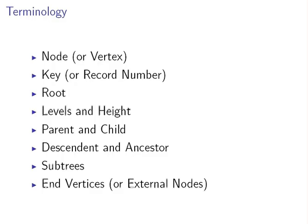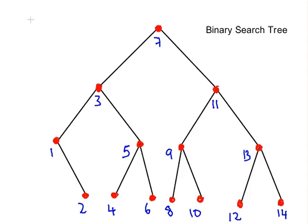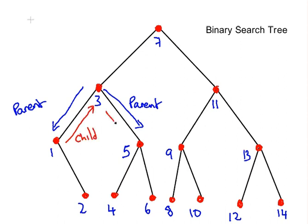Now we're going to look at parents and children and descendants and ancestors. Well we can see here, I'll take for example three, that three is a parent of one and five. And conversely that means that one and five are children of three.